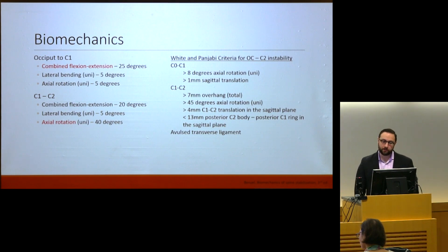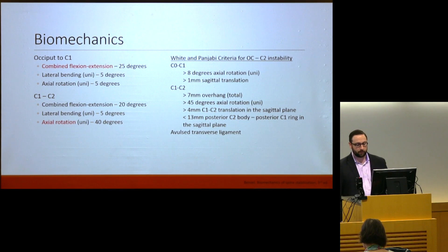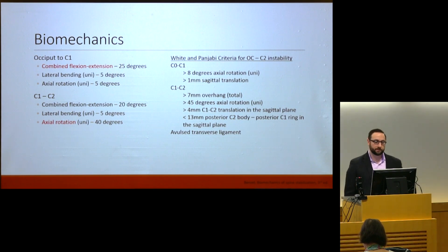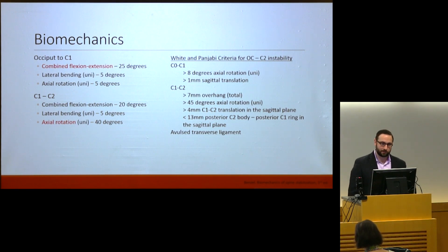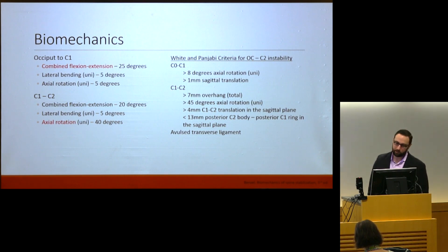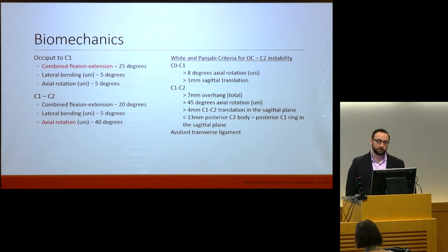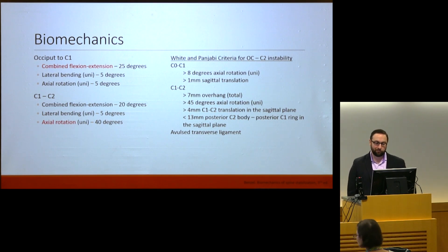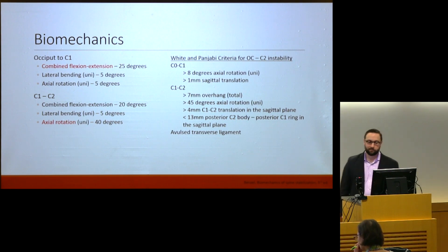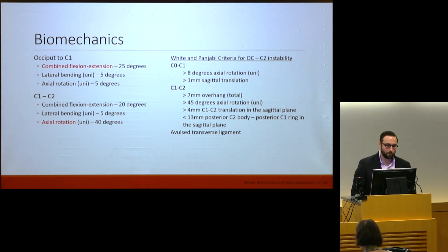The biomechanics of this region are important for decision-making, especially for folks with connective tissue disorders. Between the bottom of the skull and C1 there is a significant amount of flexion-extension — about 25 degrees of combined flexion-extension — and very little rotation. Between C1 and C2 there is about 20 degrees of flexion-extension but about 40 degrees of axial rotation to each side. So a significant amount of rotation occurs at C1-2, and a significant amount of flexion-extension occurs at the occiput-to-C1 level.